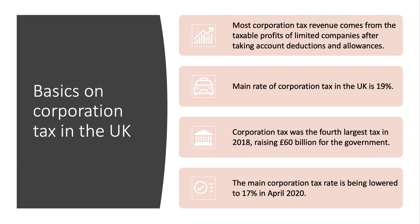The forecast is that corporation tax in the UK will be cut, if the Conservatives win the election, from 19 to 17 percent. Labour's proposals would involve an increase in the main rate to 25 percent.